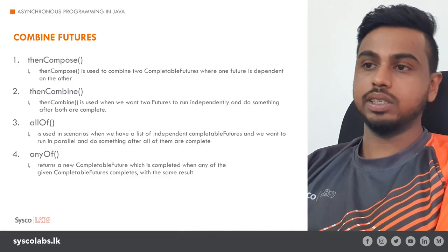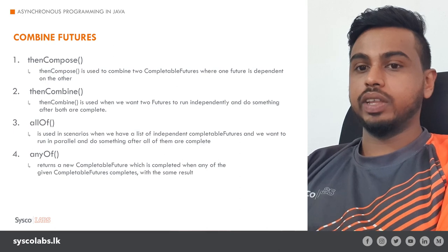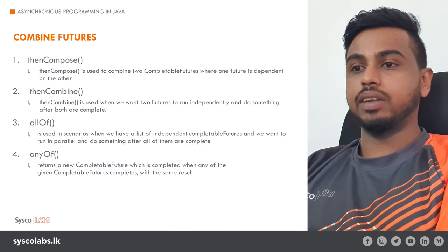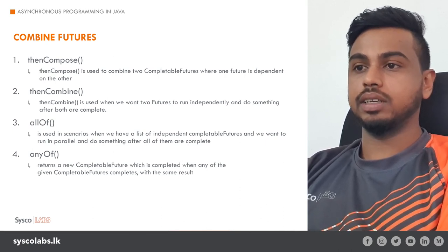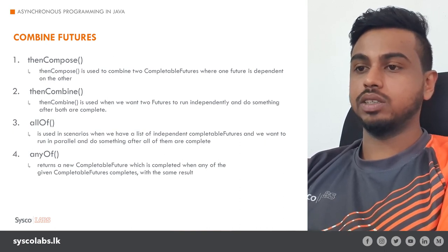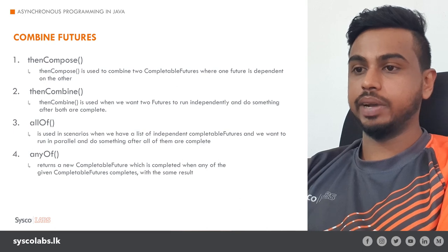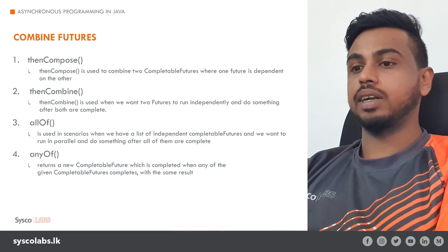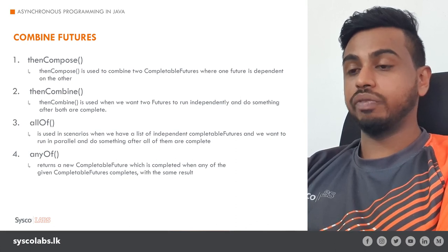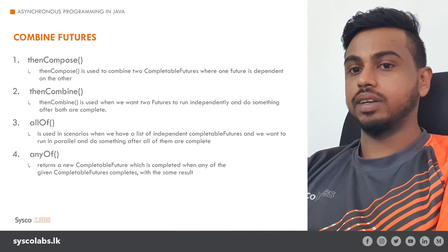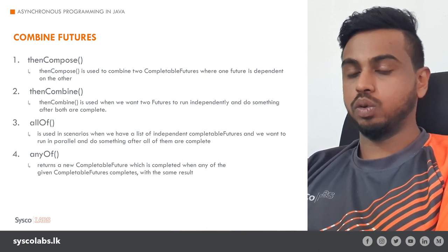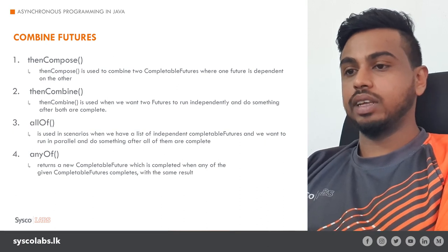Now we have combining futures. If there are multiple parallel tasks running and you want to combine their results, you can use the combine futures methods. If you want to combine two tasks, you can use the thenCombine method. If there are multiple tasks and you want to get the result once all of them are finished, or once one task is finished, you can use the respective methods. Let's see the code examples.